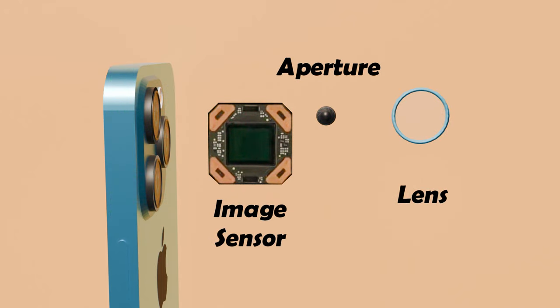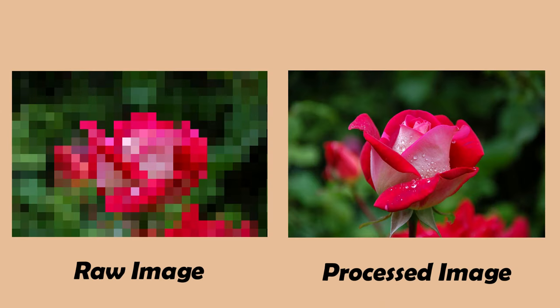Here is a picture of a flower and its pixelated form, where you can see each pixel made up of different combinations of RGB colors. Once the image sensor captures the data, the phone software comes into play.